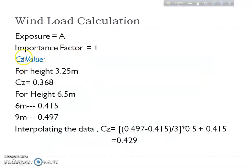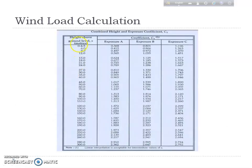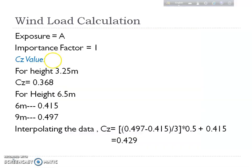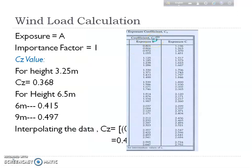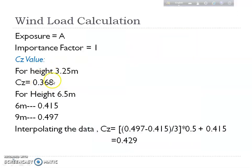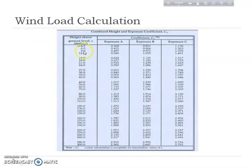To find CZ values, we calculate at heights of 3.25 meters and 6.5 meters for each story. For 3.25 meters, the chart shows that for the range 0 to 4.5 meters under Exposure A, the CZ value is 0.368.